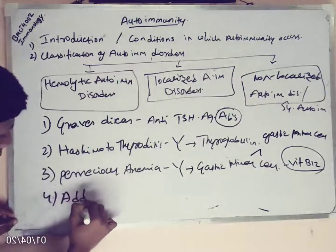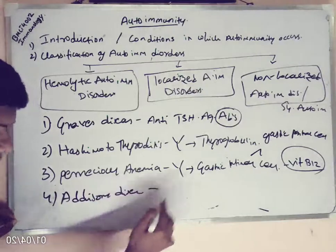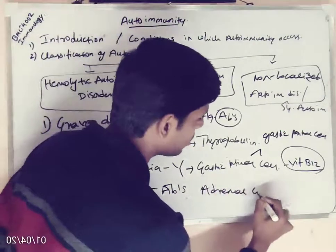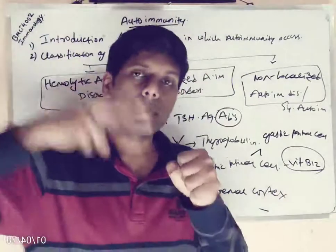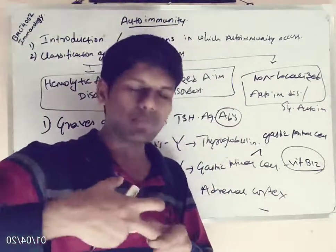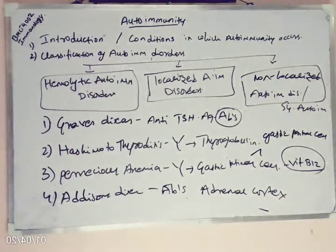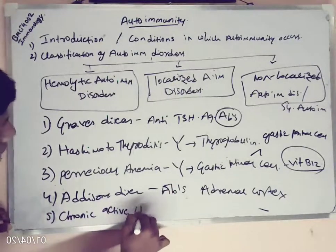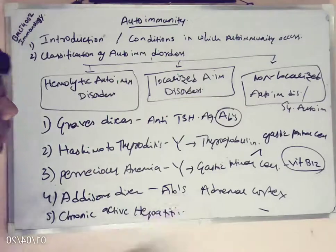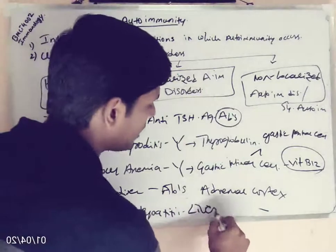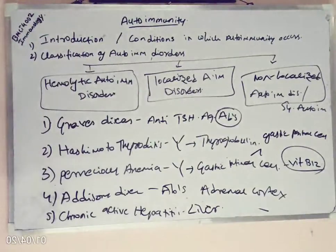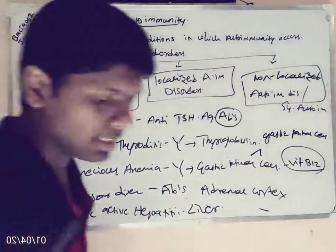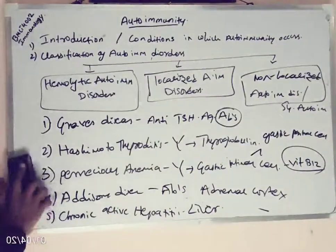Fourth is Addison's disease, where antibodies are developed against the adrenal cortex, which gets attacked by the immune system resulting in Addison's disease. Fifth is chronic active hepatitis, an autoimmune disorder that attacks the liver. So the five localized autoimmune disorders are: Graves' disease, Hashimoto's thyroiditis, pernicious anemia, Addison's disease, and chronic active hepatitis.